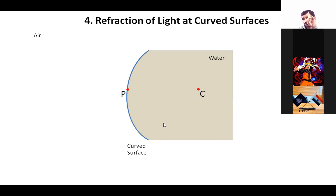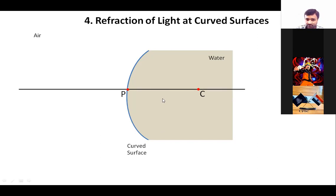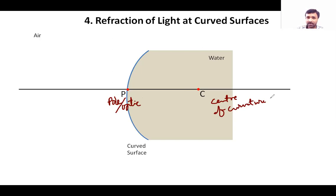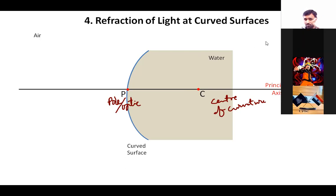Now I am connecting the pole and center of curvature with a line. I connected those two points — pole or optic center with center of curvature — and that line I am calling principal axis. What is the principal axis? The line which is joining the pole and center of curvature. That imaginary line connecting or passing through them is called the principal axis.